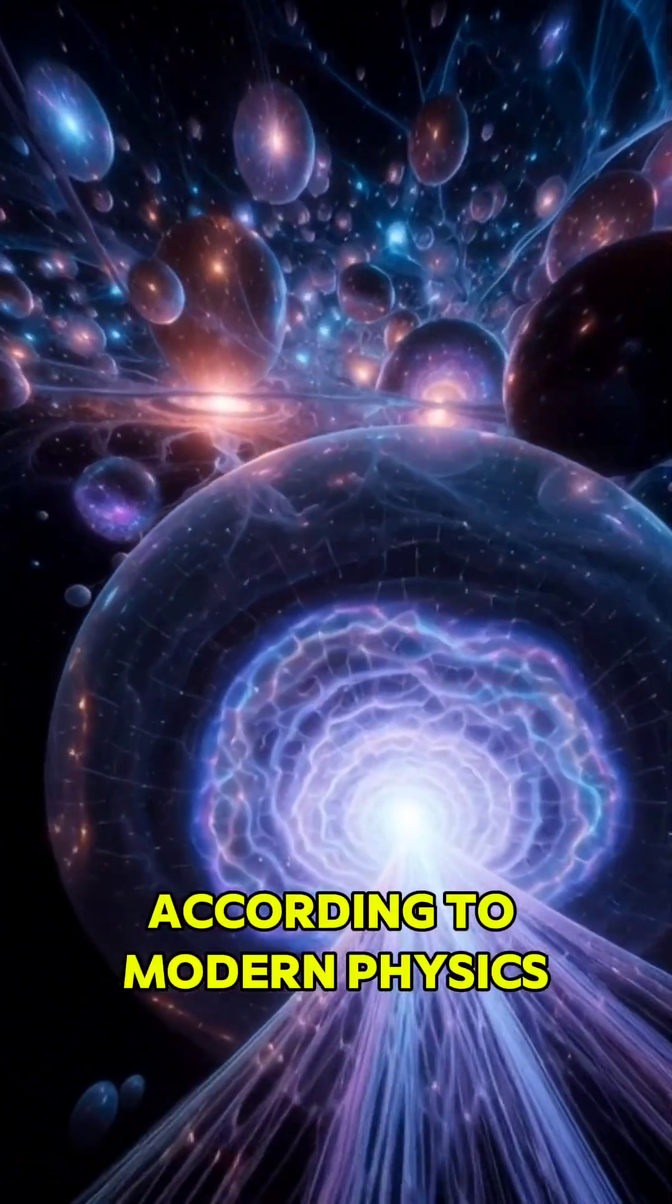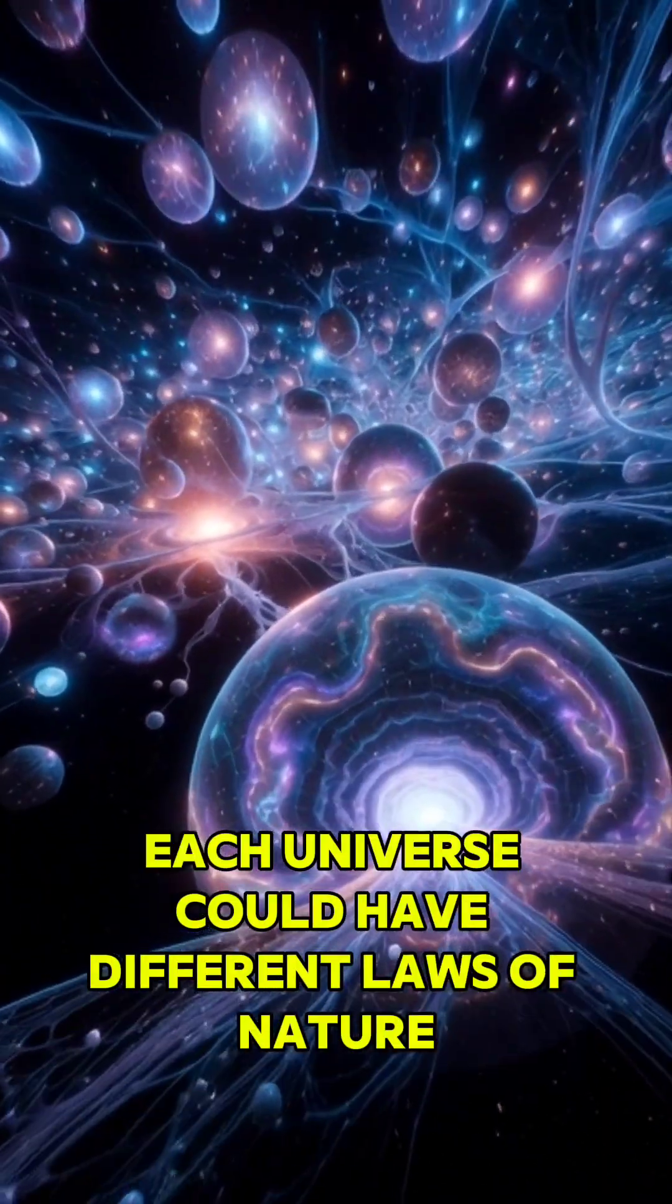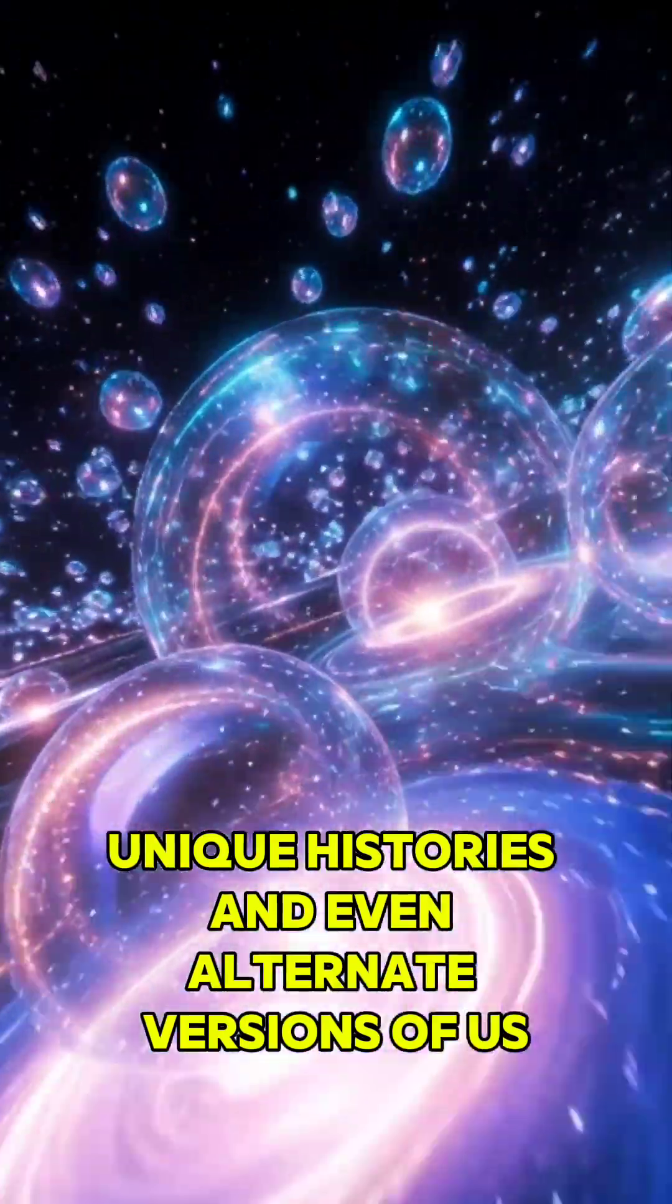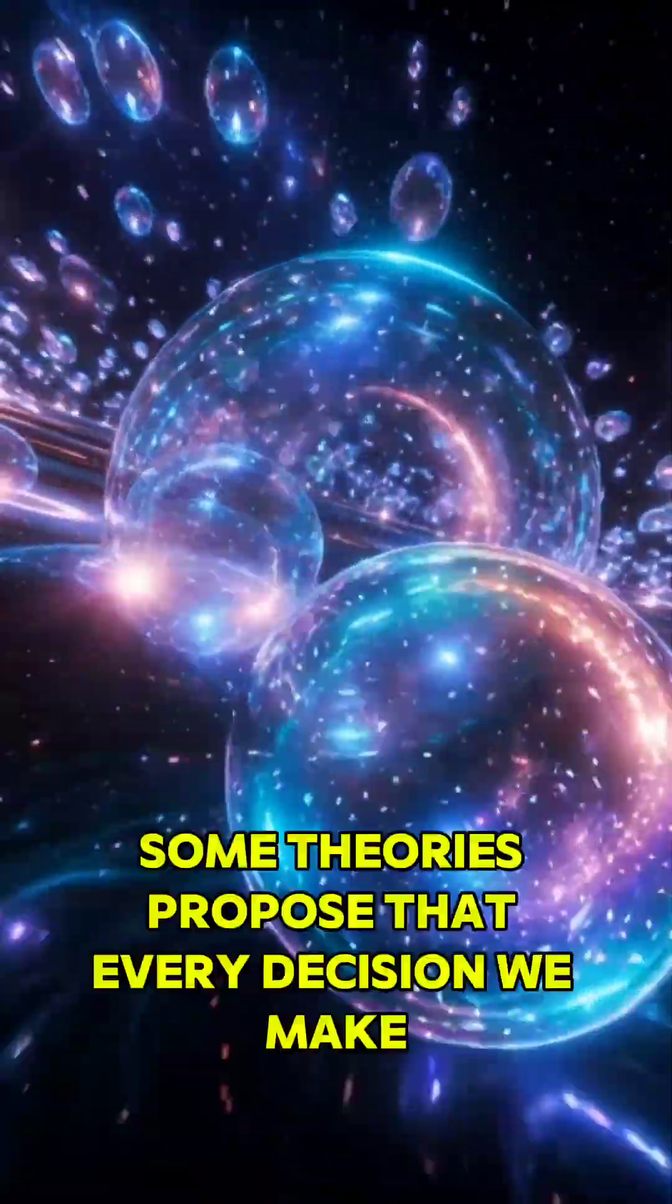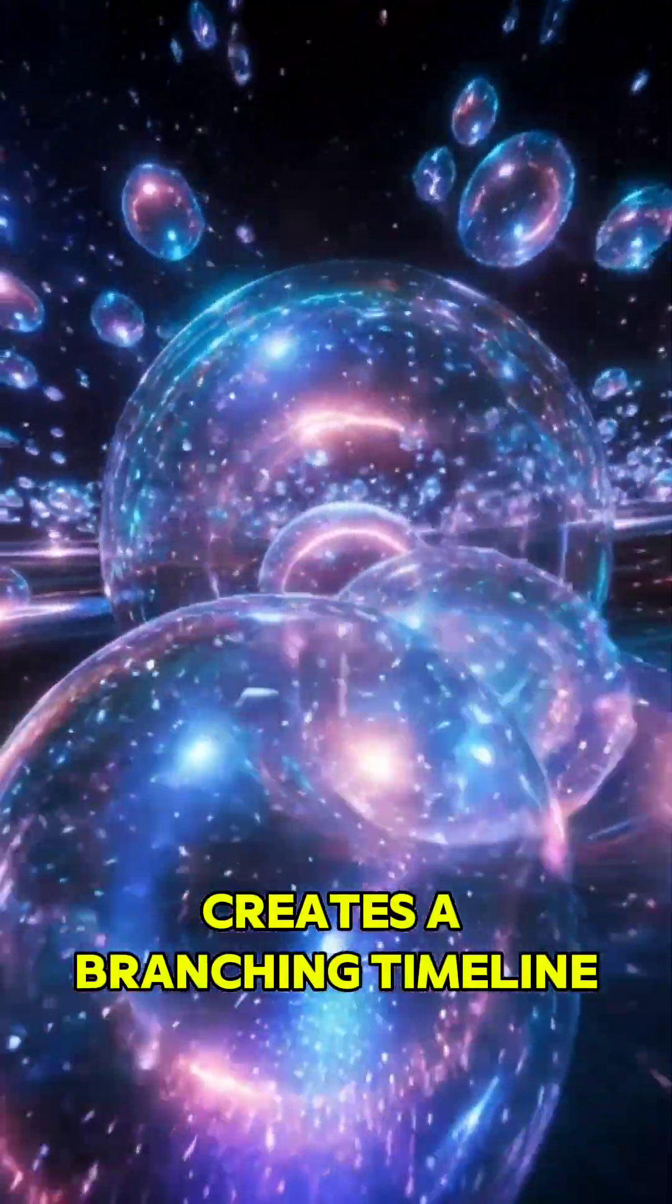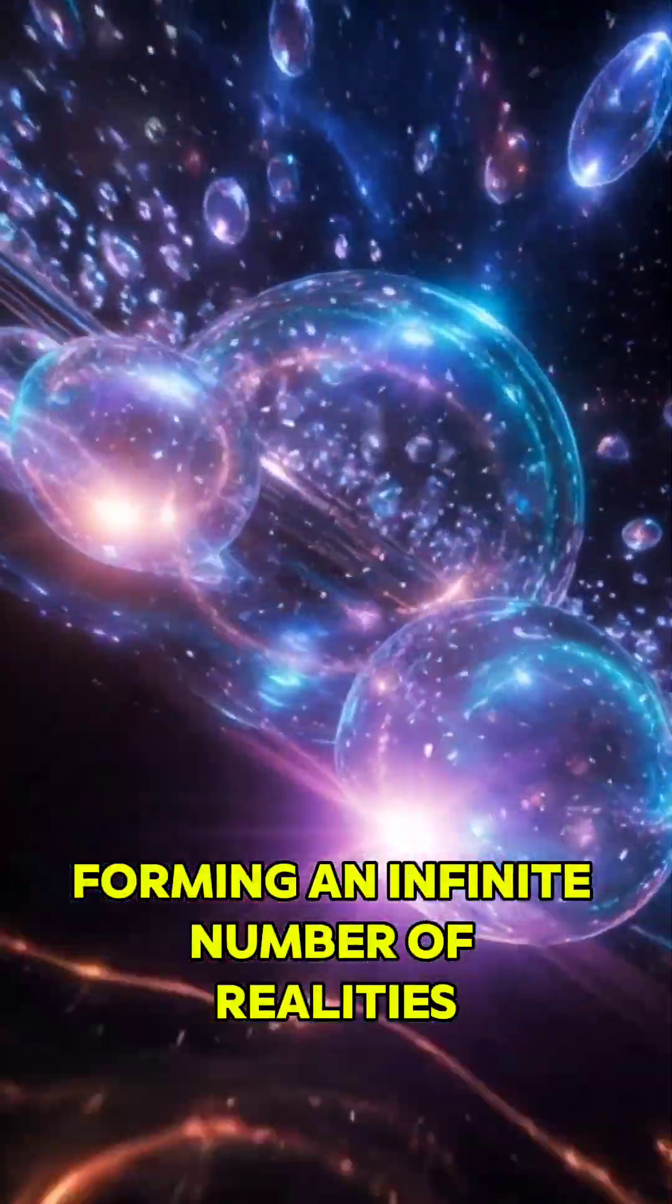According to modern physics, each universe could have different laws of nature, unique histories, and even alternate versions of us. Some theories propose that every decision we make creates a branching timeline, forming an infinite number of realities.